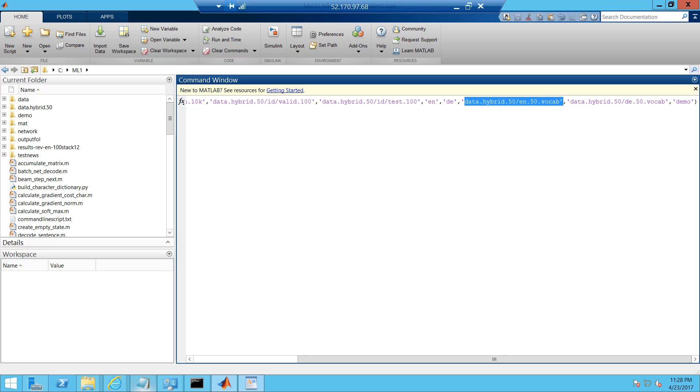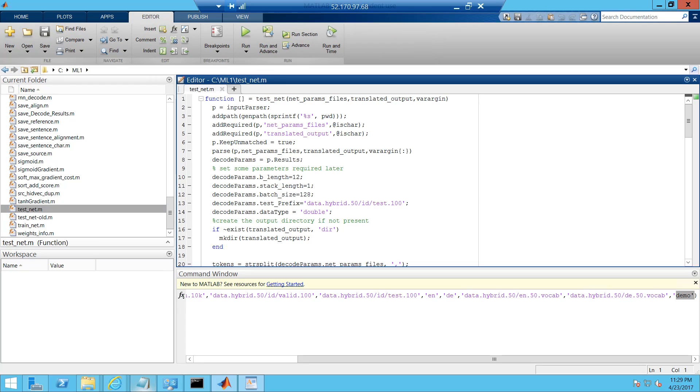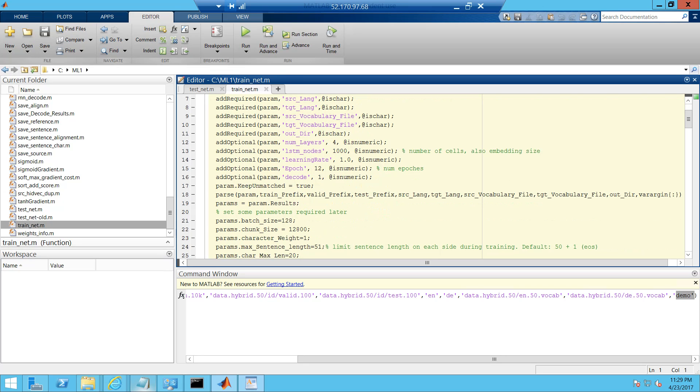We are also passing the location of the vocabulary files that we have already created using Python and also the destination vocabulary. And this is the output folder where we want to create our mat files. If I quickly open the train net, you can see that there are a lot of parameters that you can vary during testing.